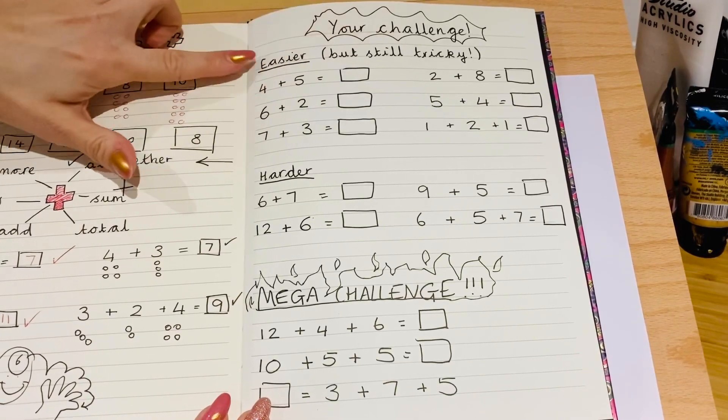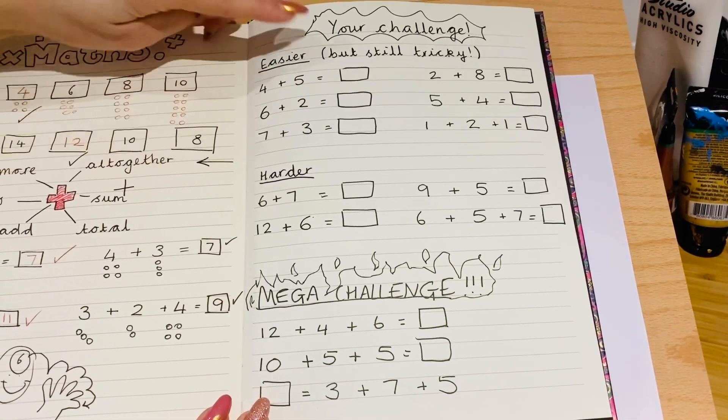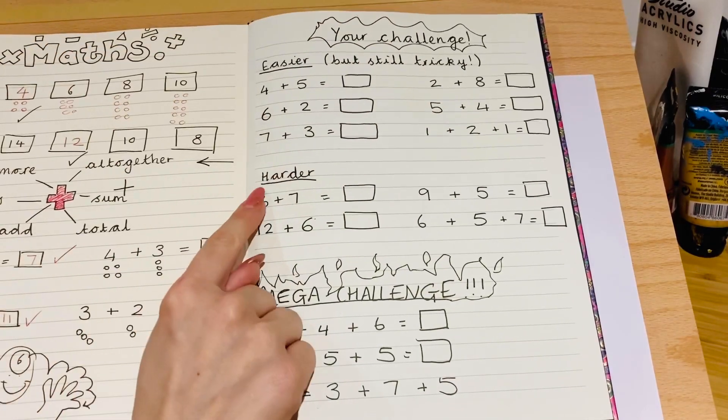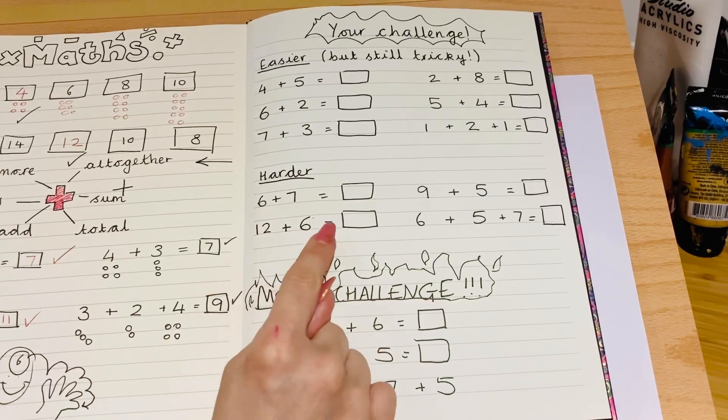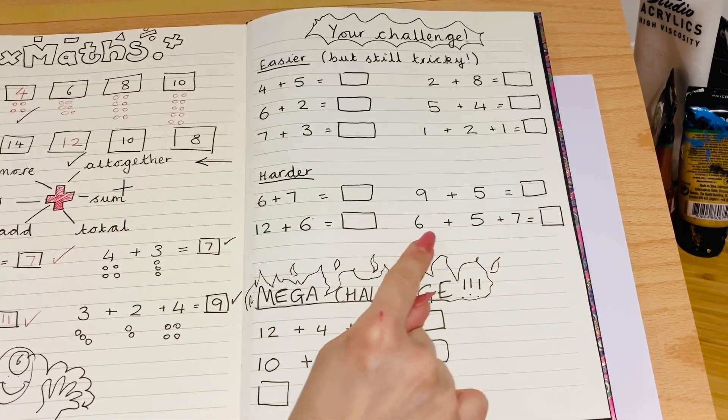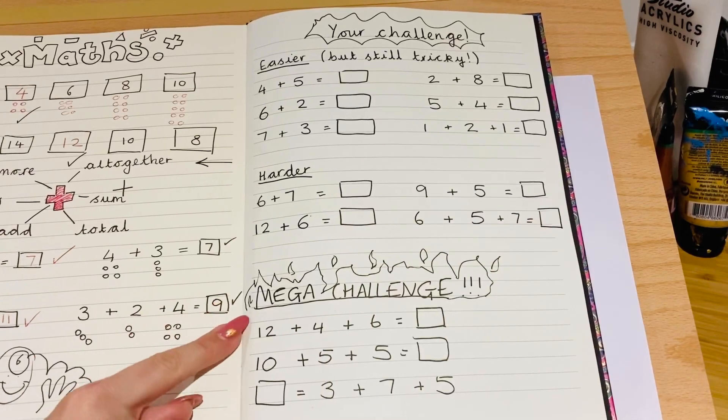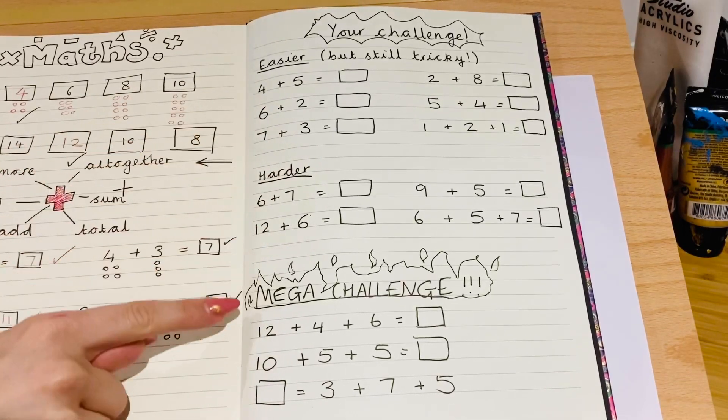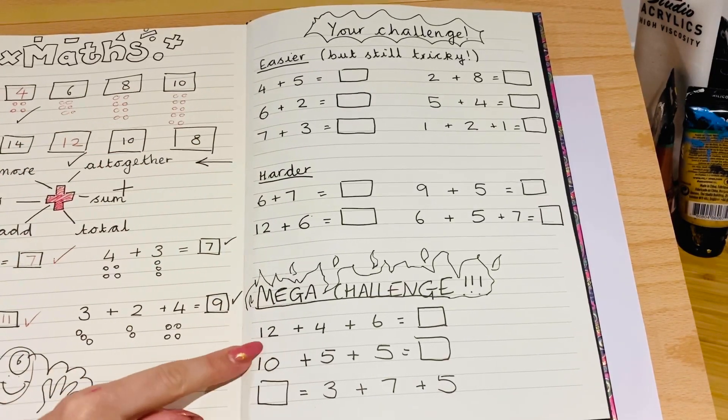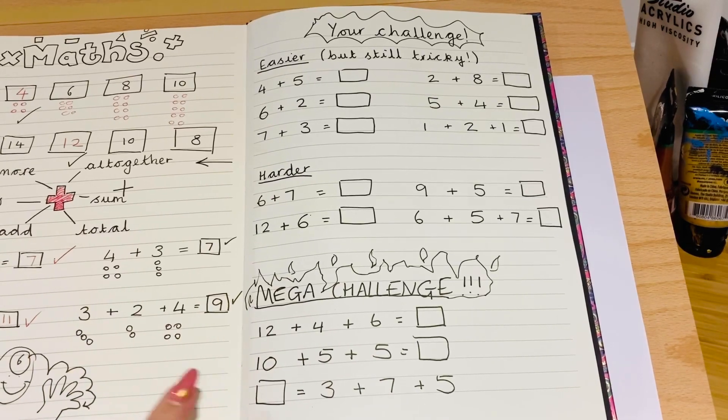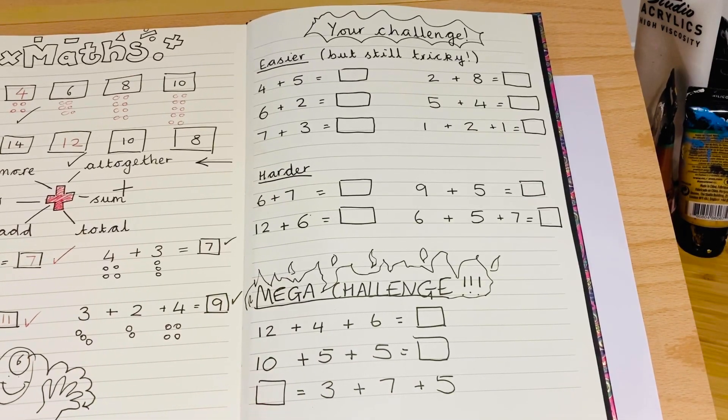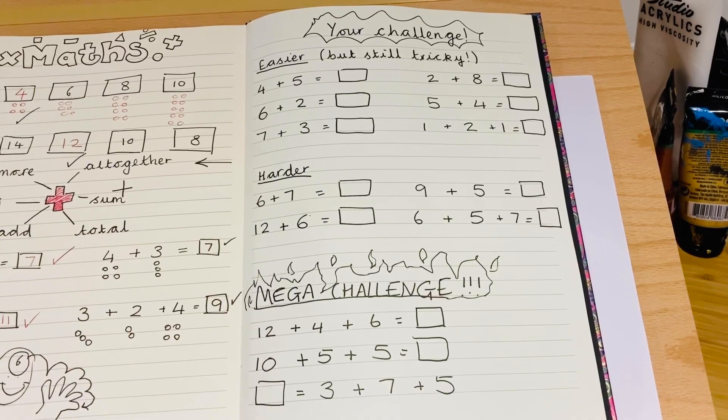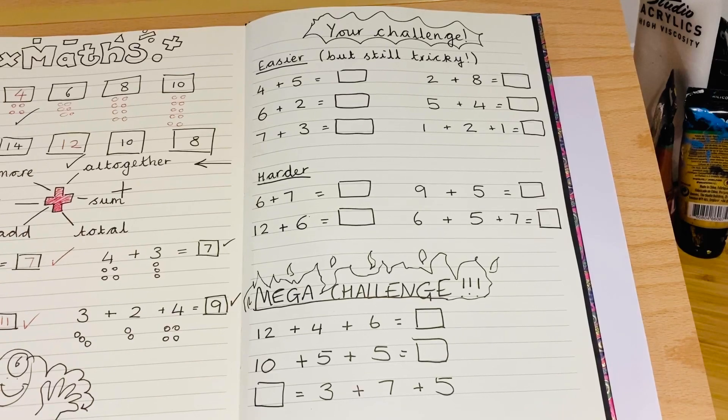Okay, so I've put a series of different challenges on here. It says your challenge. And this one here is the easier section, but still tricky. So you've got all these different calculations to solve. This one is slightly harder. So we've got a few larger numbers and this one got a triple addition. This one is the mega challenge. So try this one if you're feeling brave. You could perhaps start with these and move on to that one. This one has greater numbers and triple additions. And this last one is a bit of a mix up. We've not really talked about that one yet. So if you are ready to go, pause the video and have a little go on your papers now. Off you go.